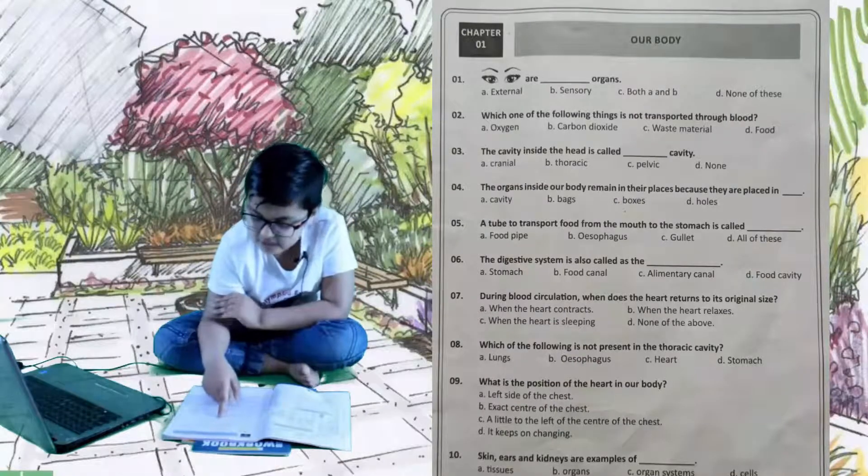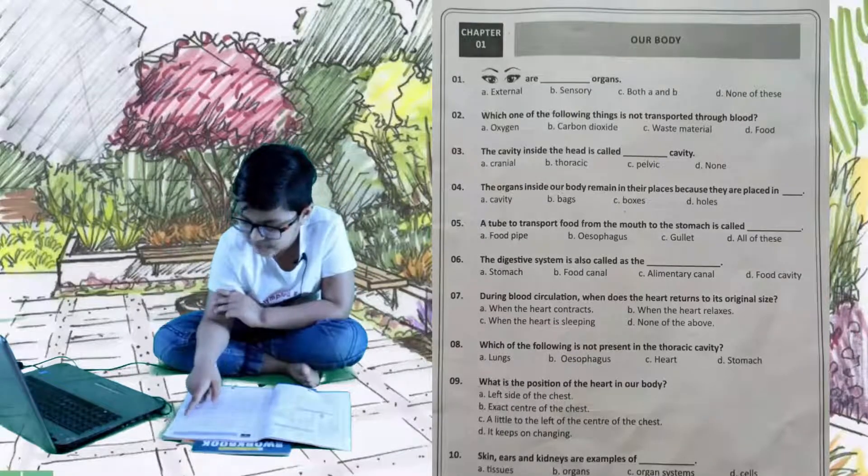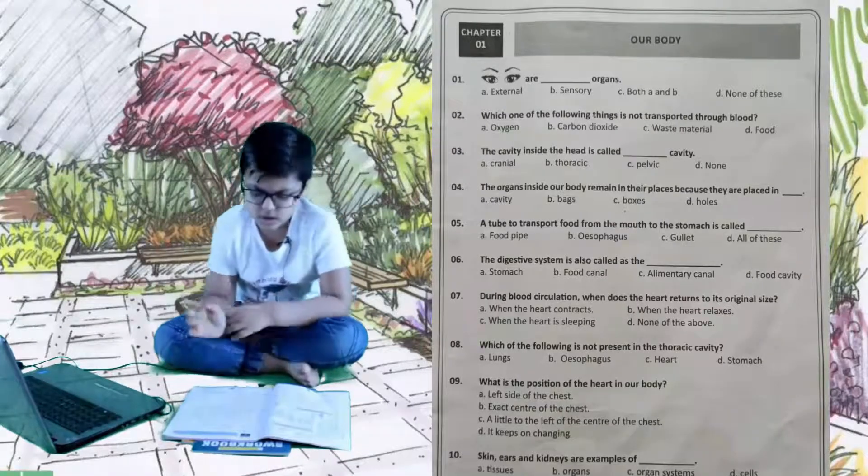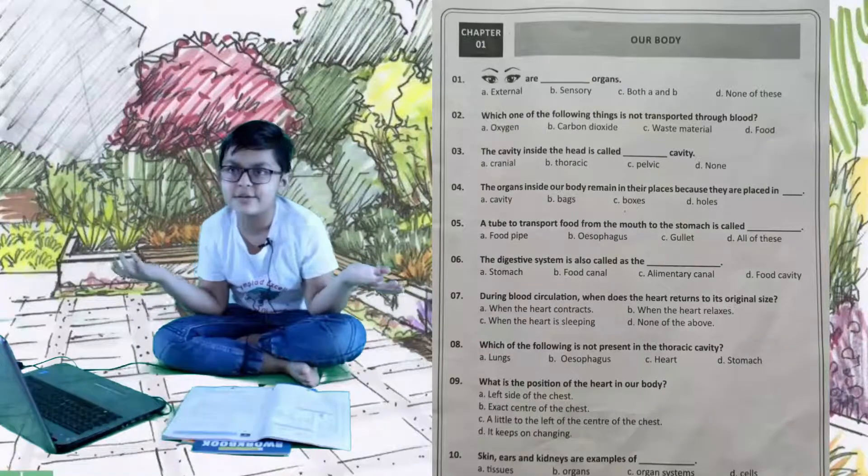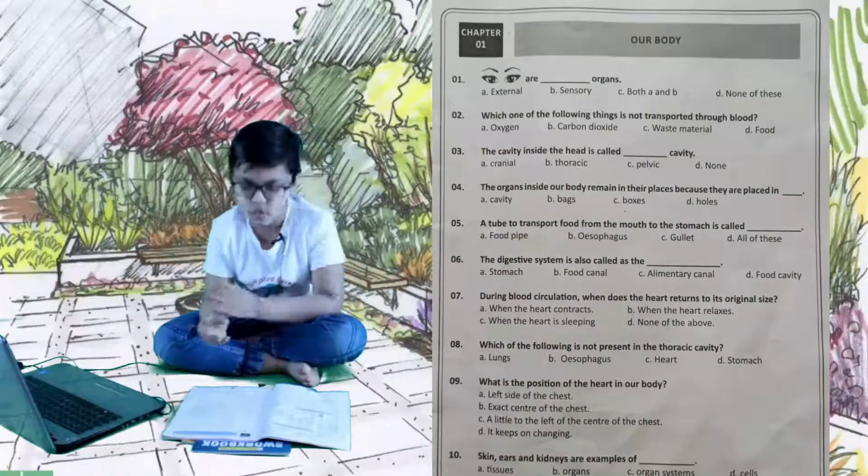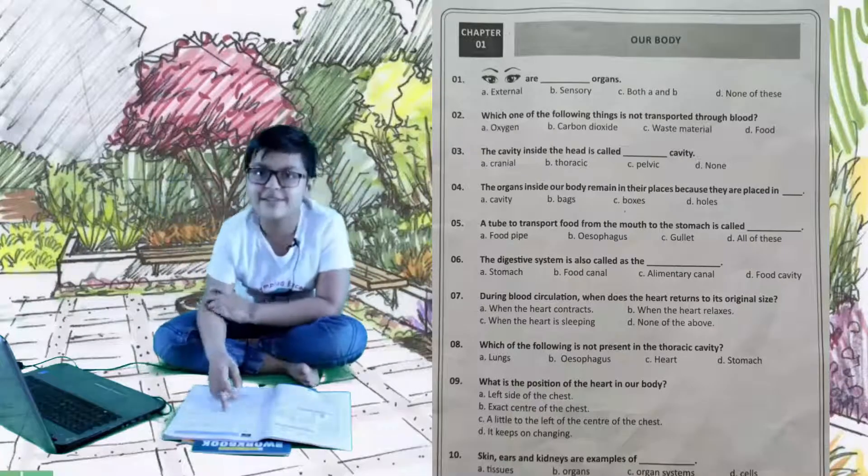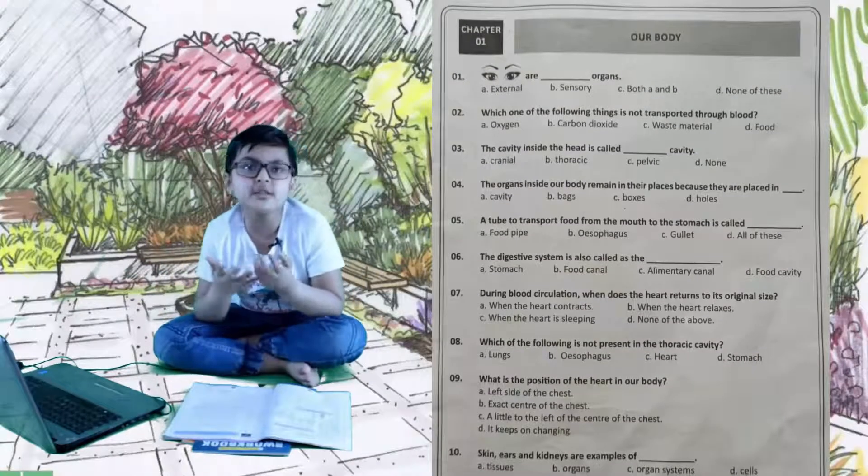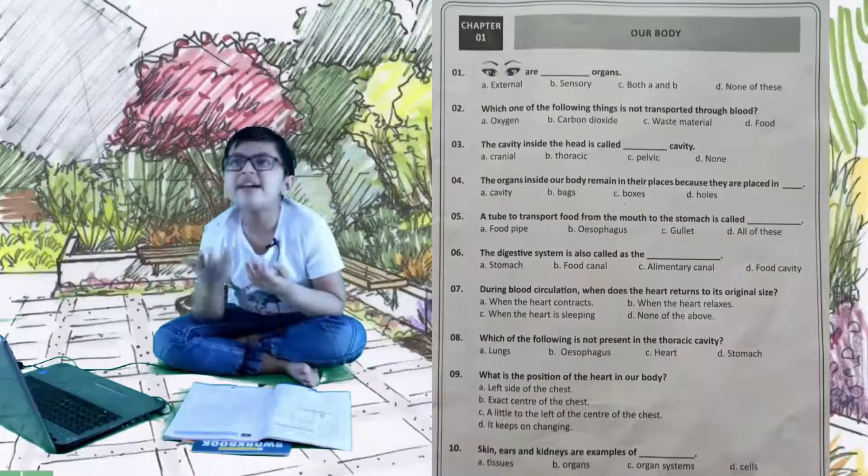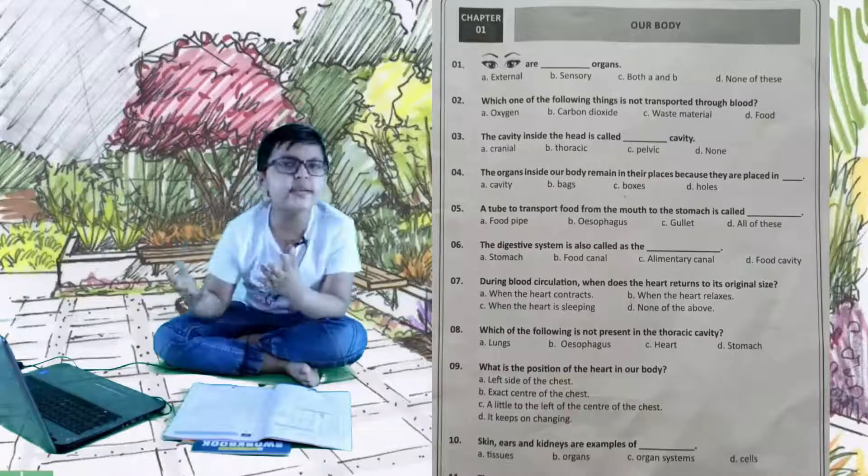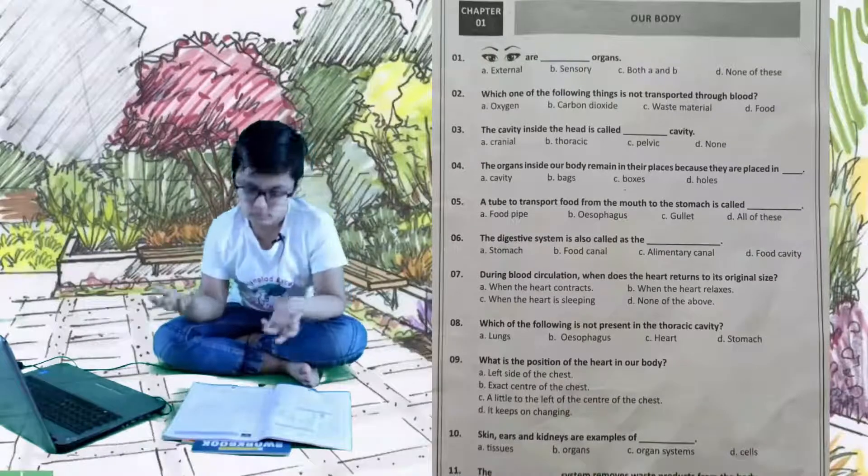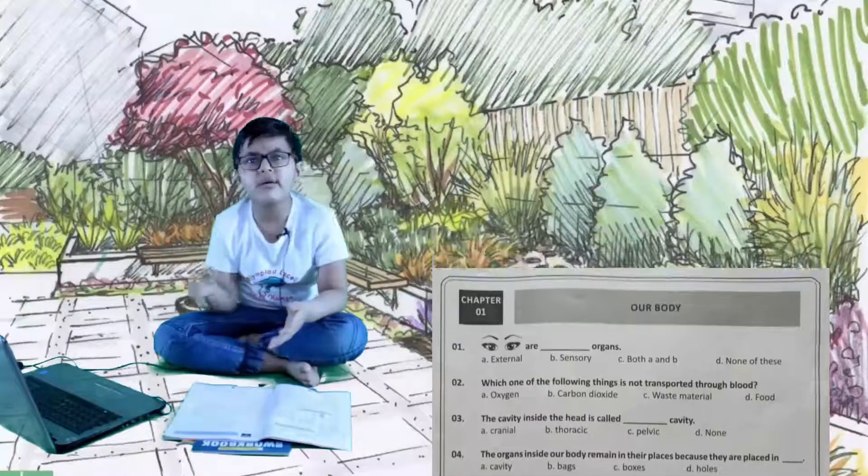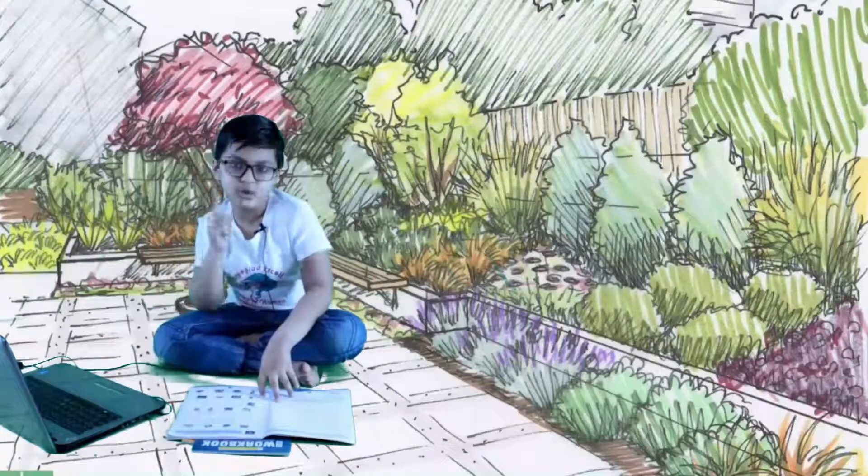Let's choose a random question. The organs inside our body remain in their places because they are placed in dash. Option A cavity, B bags, C boxes, and D is holes. The right answer is A, cavity. Let me tell you the definition of cavity. It is like a space or a compartment where organs are stored.